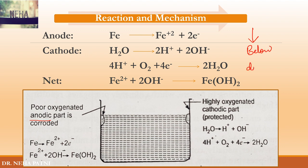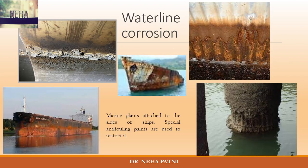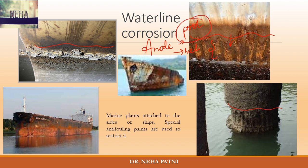Looking at these cases, you are able to understand these are water line corrosions, right? In all the pictures you can identify the water line, and just below the water line — if you decrease the level of water — you will be able to see that this area becomes anodic. Can you tell me: which one becomes the anode — the poor oxygenated part or the rich oxygenated part? You may write it in the comments. The answer is: the poor oxygenated part.